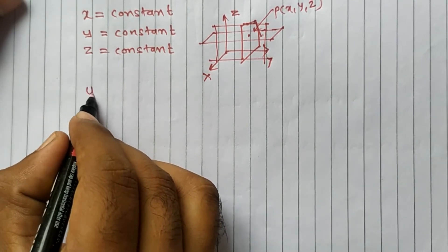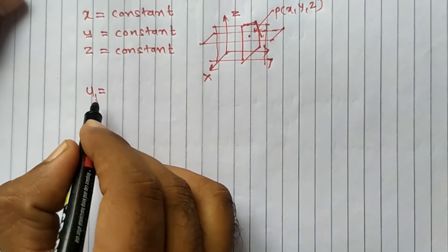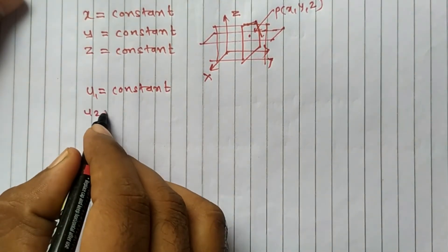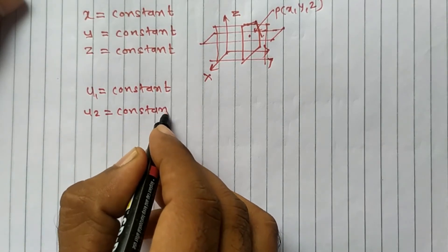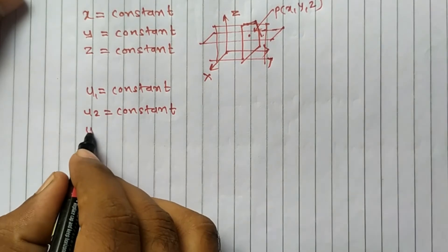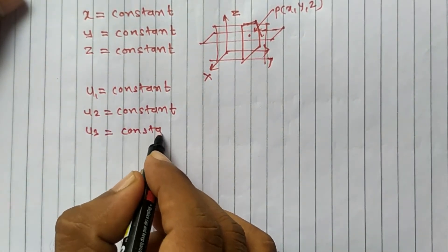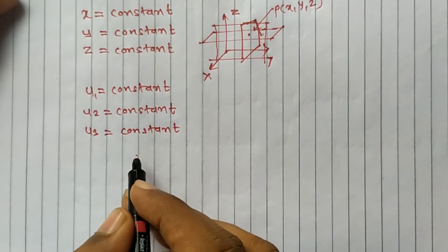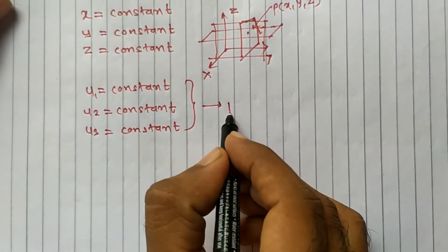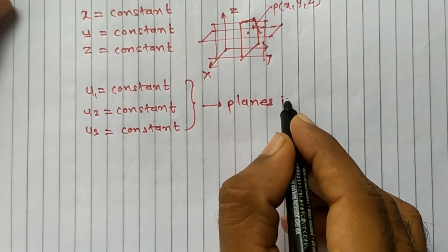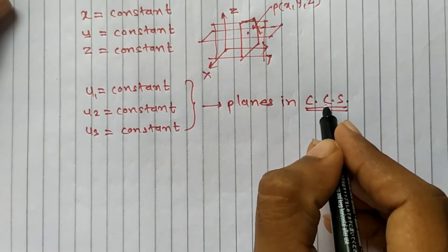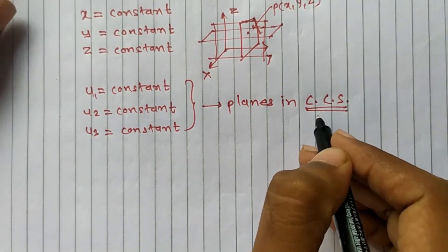Similarly, in the curvilinear coordinate system, I can write u1 equals constant, u2 equals constant, and u3 equals constant. These are the equations of planes — or more generally, surfaces — in the curvilinear coordinate system.